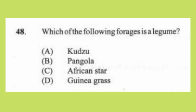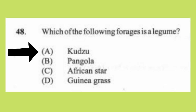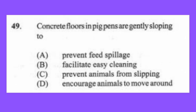Question 48: Which of the following forages is a legume? (a) kudzu, (b) pangola, (c) African star grass, (d) guinea grass. The answer is A, kudzu. Pangola, African star grass, and guinea grass are carbohydrate plants (grasses). Legumes are protein plants, and kudzu is a legume.